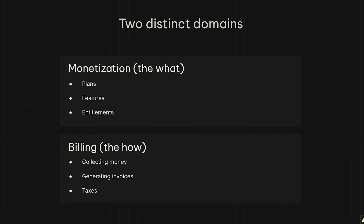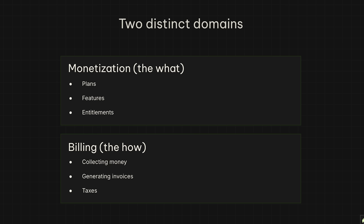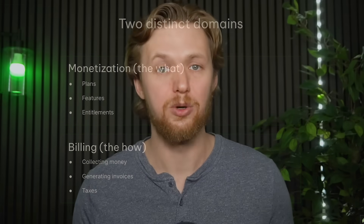It's time to stop letting hard-coded billing logic kill your momentum. The problem is that we've been building it all wrong. We tightly couple the what with the how. The what is your monetization logic — your plans, features, and entitlements. The how is the billing mechanics: collecting money, generating invoices, and handling taxes. When these two are tangled together in your codebase, your application becomes brittle and slow to change.